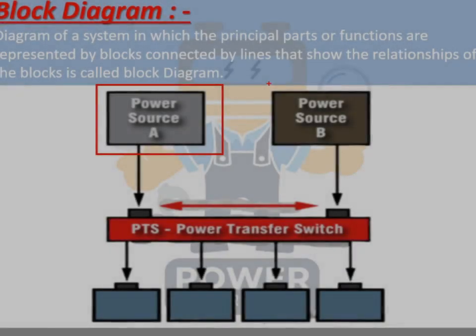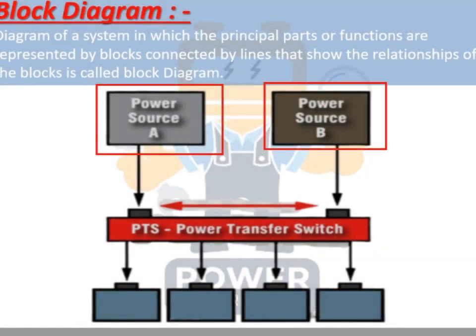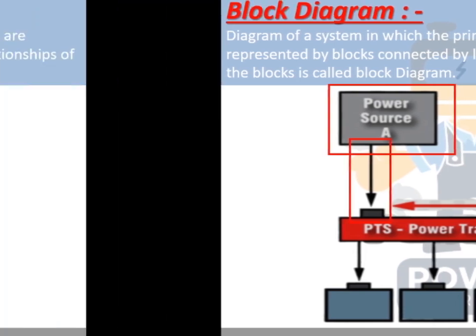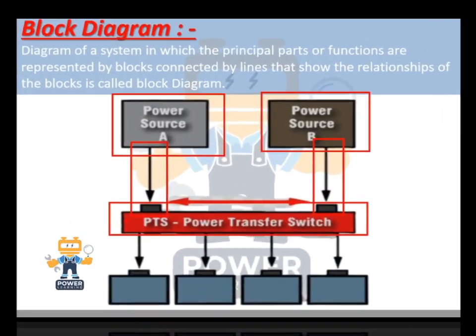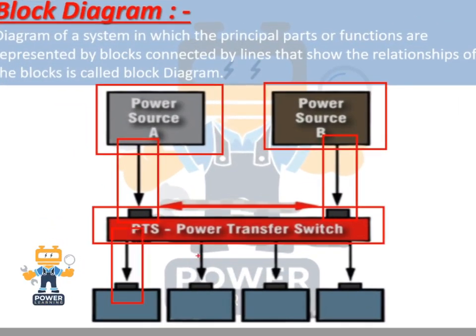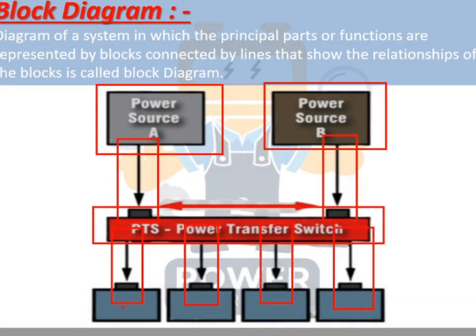Here we have two sources of power shown in boxes — power source A and power source B. Both power sources are connected, as shown by arrows, to a power transfer switch. After the power transfer switch, there are four outputs shown by four arrows.